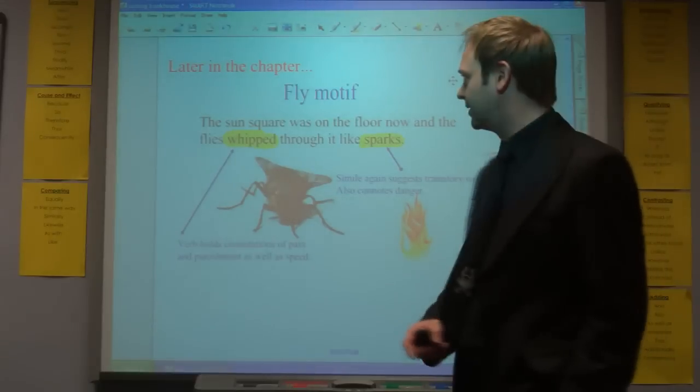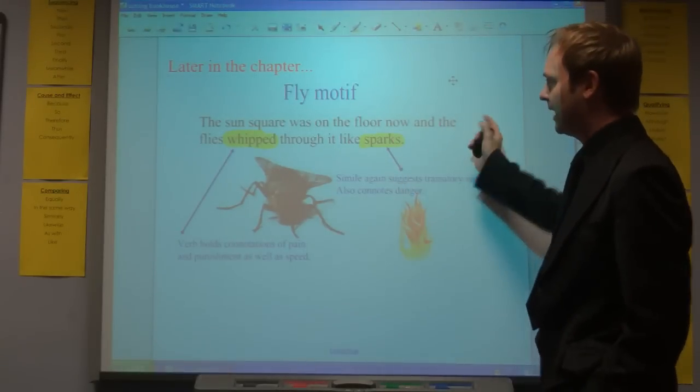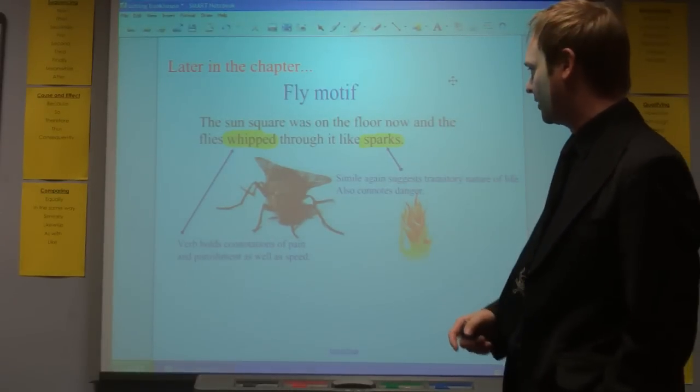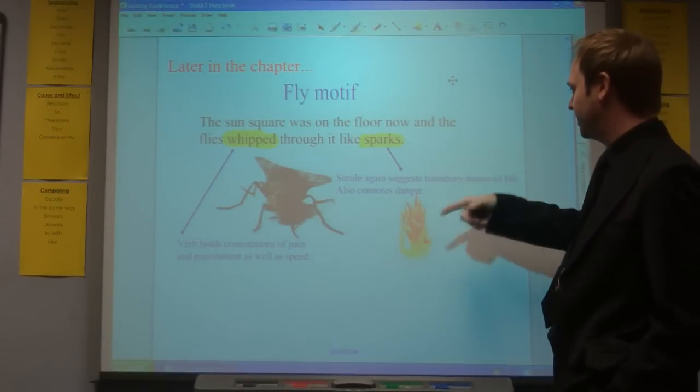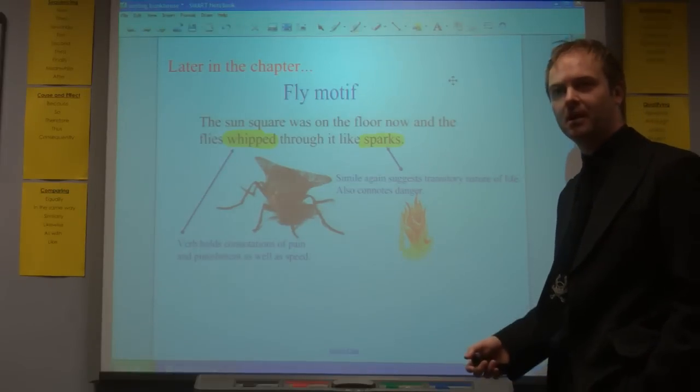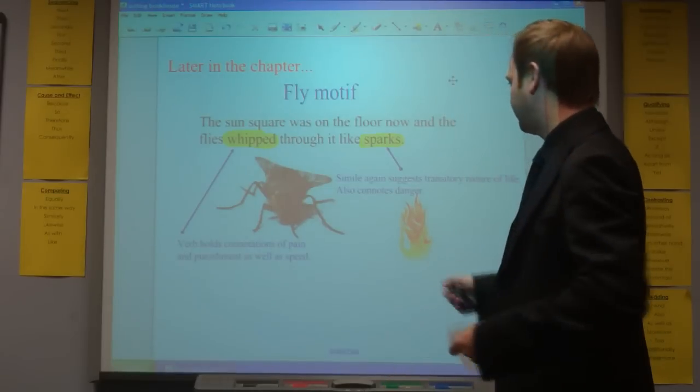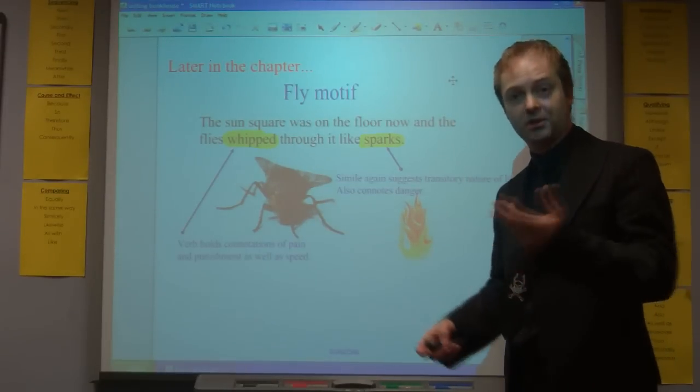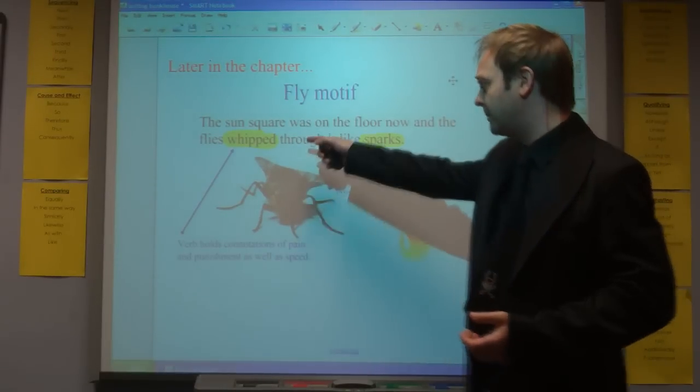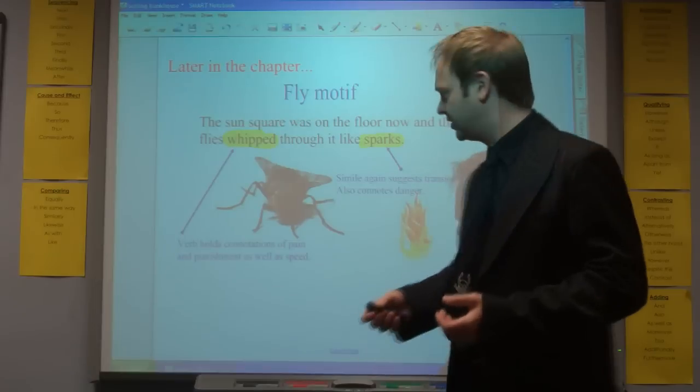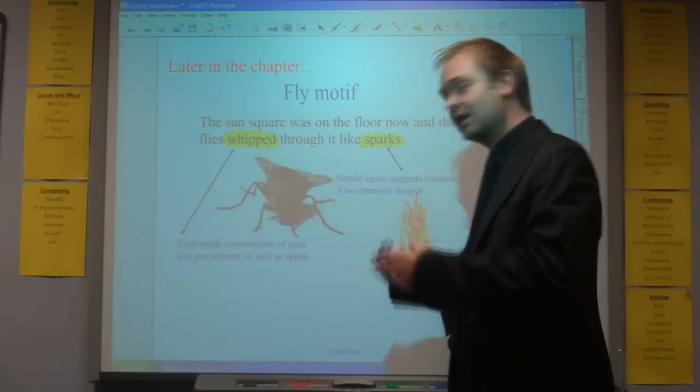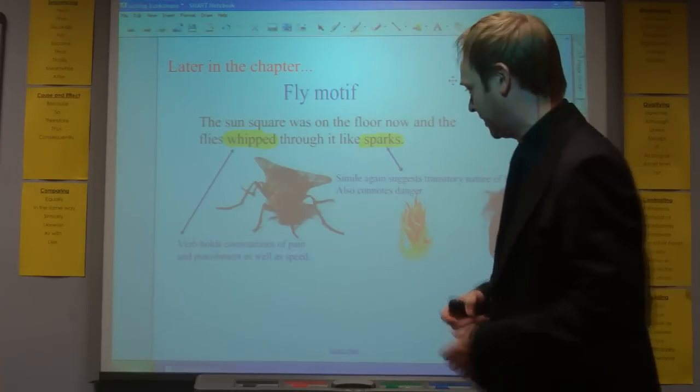The fly motif's repeated later in the chapter. The sun square was on the floor now and the flies whipped through it like sparks. Sparks, that simile that suggests the transitory nature of life. Sparks are here and then gone very quickly. But it also connotes danger as well. A spark can start a fire. Whipped holds connotations of pain and punishment as well as the sense of speed suggested by the activity of the flies.